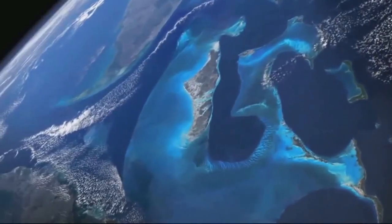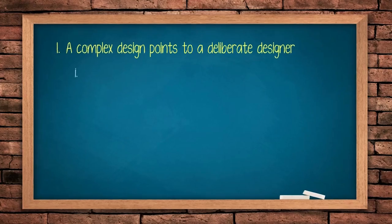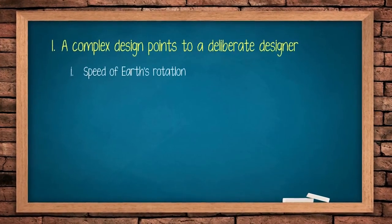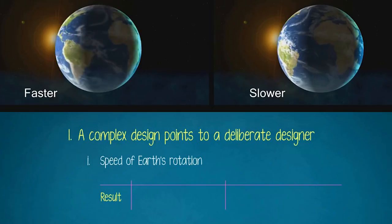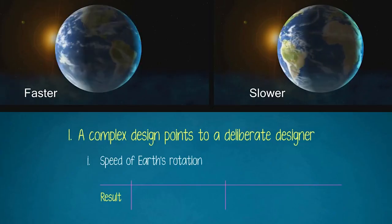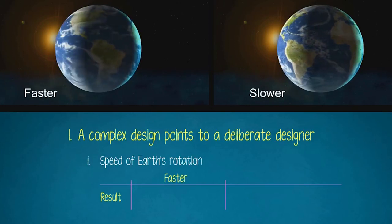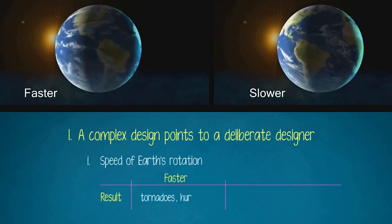Let's see some of the examples. Speed of Earth's Rotation: If the Earth rotates too quickly, we will have too many storms like tornadoes and hurricanes.